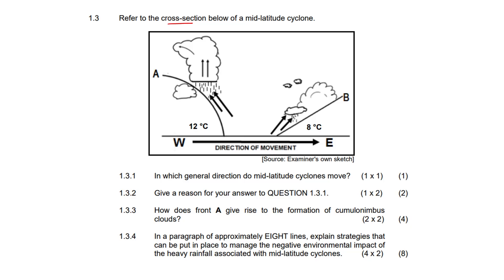It typically moves from west to east. So in which direction do mid-latitude cyclones move? More often than not it is going to be from west to east or eastwards. Give a reason for your answer in 1.3.1. It's driven by the westerlies, or in other words, it occurs in the westerly wind belt.